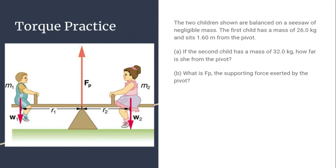Okay, so I'm going to give you a chance to read through this. Notice the two children shown are balanced on the seesaw of negligible mass. The first child has a mass of 26 kilograms and sits 1.6 meters from the pivot, okay? So it's giving you that distance. If the second child has a mass of 32 kilograms, how far is she from the pivot in order to balance that out? And then what is the FP, the supporting force exerted by the pivot? So I'm going to give you a chance to solve that, and I'm going to get a piece of paper while you solve it.